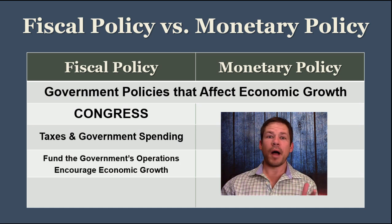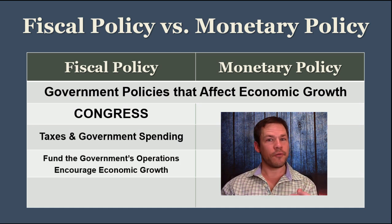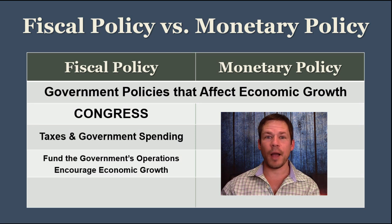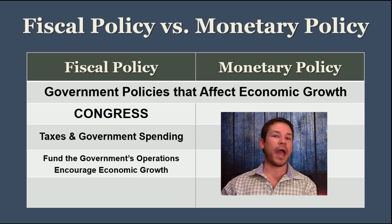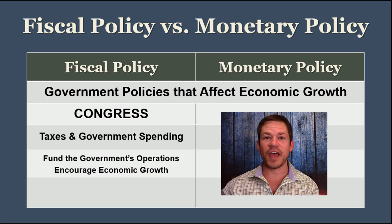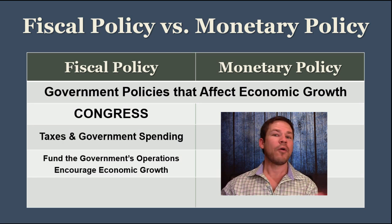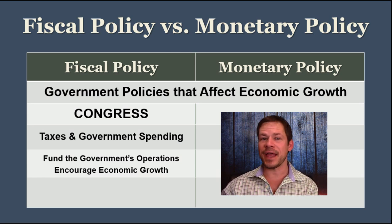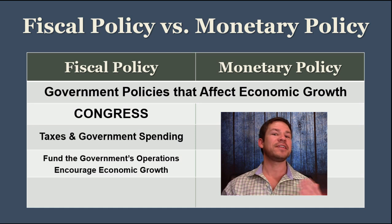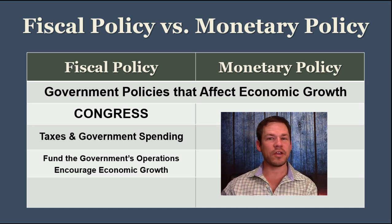Fiscal policy has two purposes. First of all, to fund the government's operations. The government has to figure out how much they need in tax revenue in order to run the government, how much they're going to spend, and if there's a deficit, how much they're going to borrow.